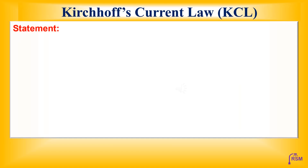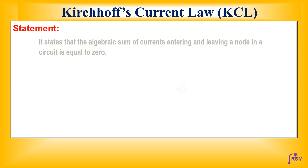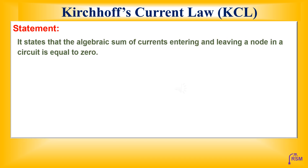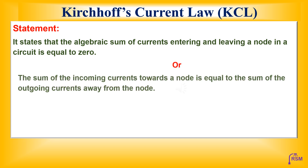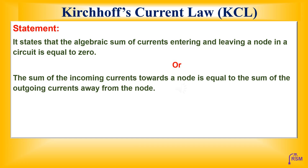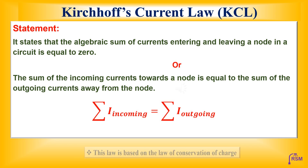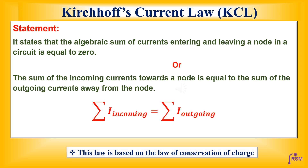Kirchhoff's current law states that the algebraic sum of currents entering and leaving a node in a circuit is equal to zero. Or it can also be stated as the sum of the incoming currents towards a node is equal to the sum of the outgoing currents away from the node. This law is based on the law of conservation of charge.